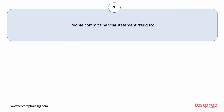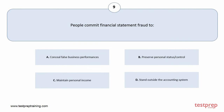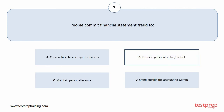Question number 9. People commit financial statement fraud to. Your options are A. Conceal false business performances, B. Preserve personal status or control, C. Maintain personal income, D. Stand outside the accounting system. The correct answer is option B.